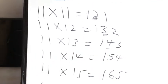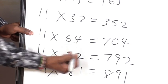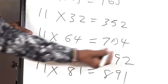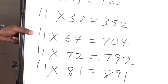So let's say 11 times 64. You just add 6 plus 4 is 10. So you retain 4, but 6 plus 4 is 10. You write 0, carry 1. 1 plus 6 is 7, 704.